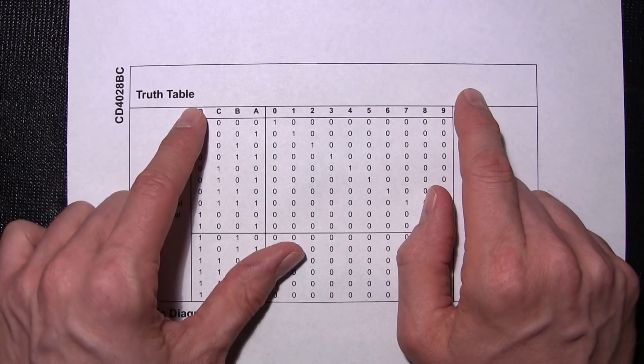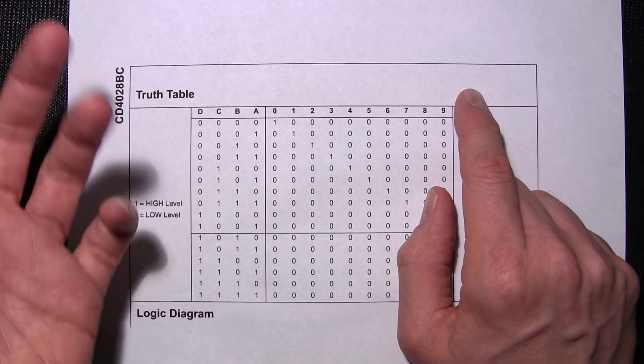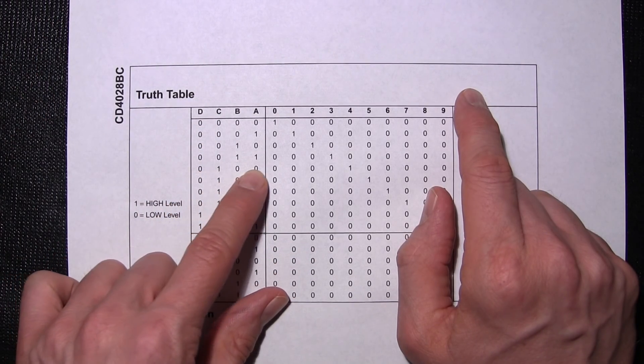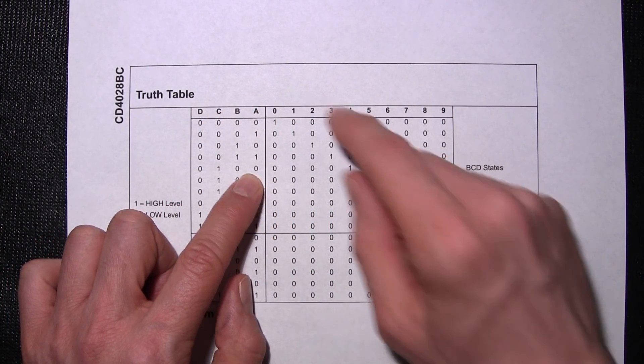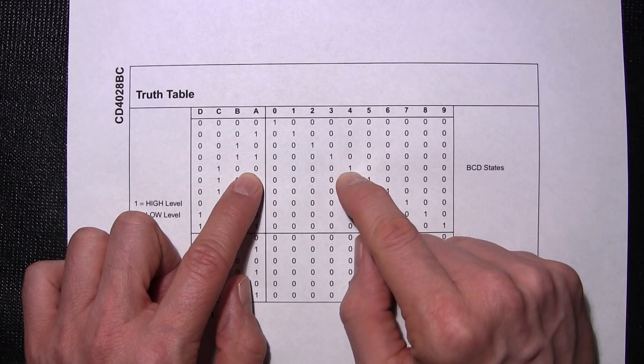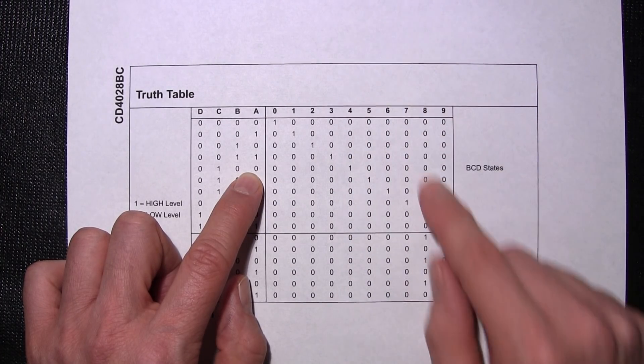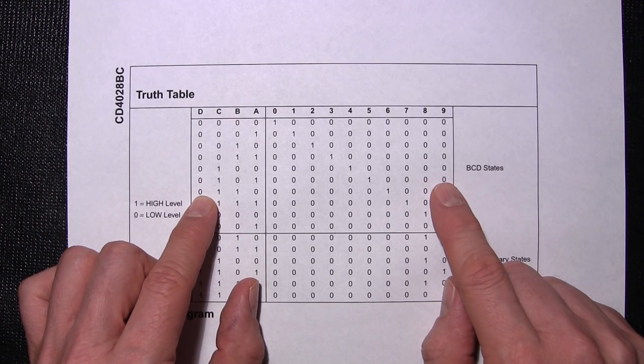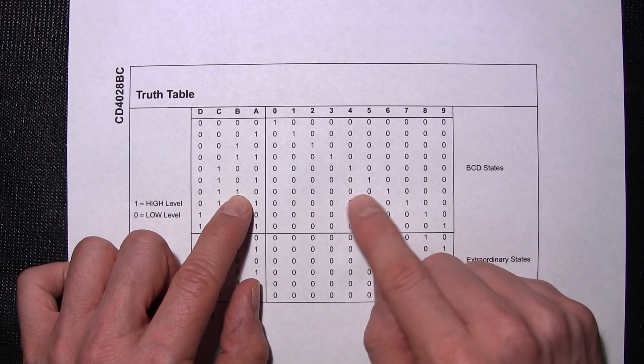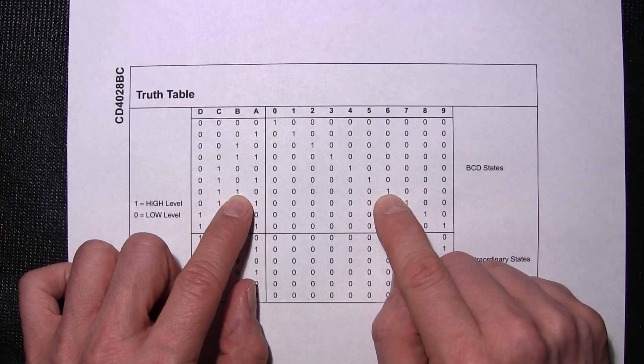If we were to put, say we'll just take this for example, this code here on the input pins, which are the D, the C, the B and the A, it would light up number 4. Light bulb number 4 would light. If we were to remove that and put this code on, 0110, we would get number 6 to light up.